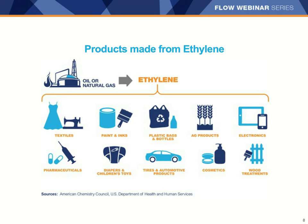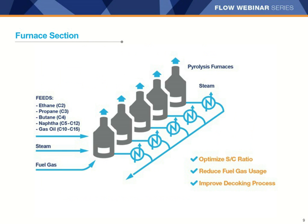Let's go back and start by talking about the furnace section of the cracker. Here there are three critical goals. The first is to optimize the steam to hydrocarbon ratio, which will help you optimize the conversion of the feedstock while minimizing coking of the furnace tubes. The second is to do this while using the minimum amount of fuel gas. And finally, you want to ensure that when it is time for decoking, the process is completed in the most effective manner possible.